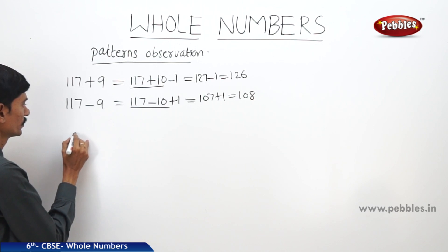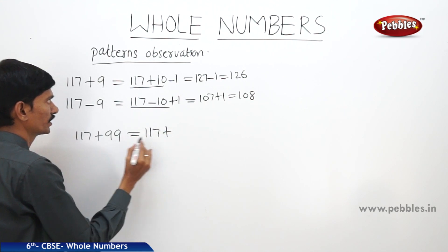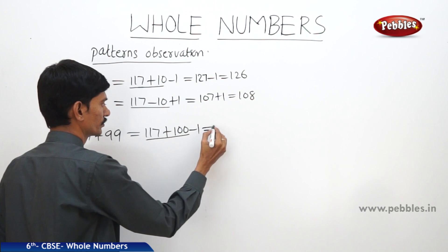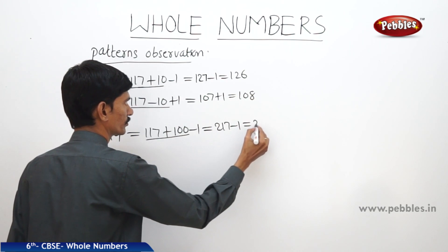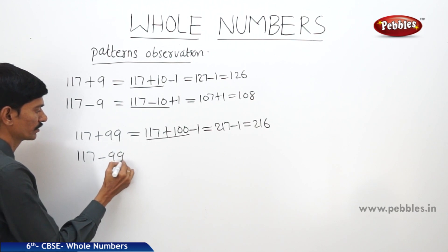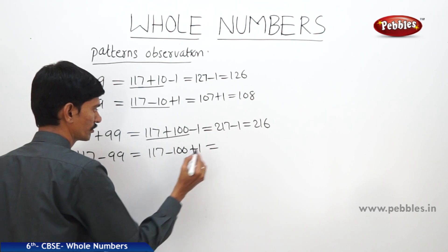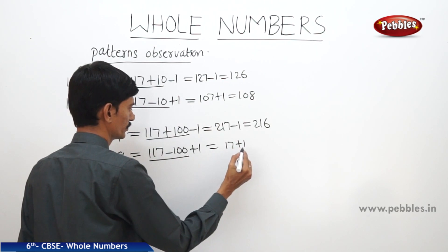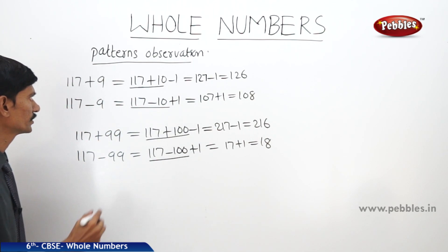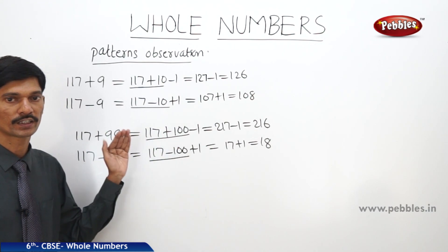Now 117 plus 99: this can be written as 117 plus 100 minus 1. So 117 plus 100 is 217, minus 1 equals 216. We can use these simplifications easily when adding or subtracting 9, 99 to or from a given number.